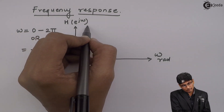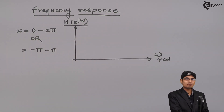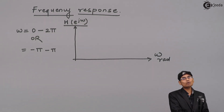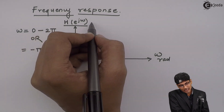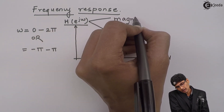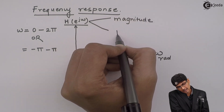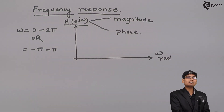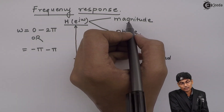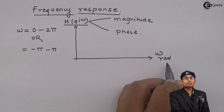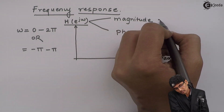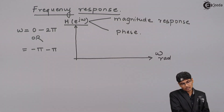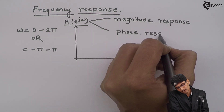A frequency response, because it is complex, I cannot directly plot a complex number. So I will transform this complex number into a polar representation which will have its magnitude and phase. A complex number is represented with a magnitude and a phase. A magnitude when plotted with respect to omega is called the magnitude response, and phase when plotted with respect to omega is called the phase response.